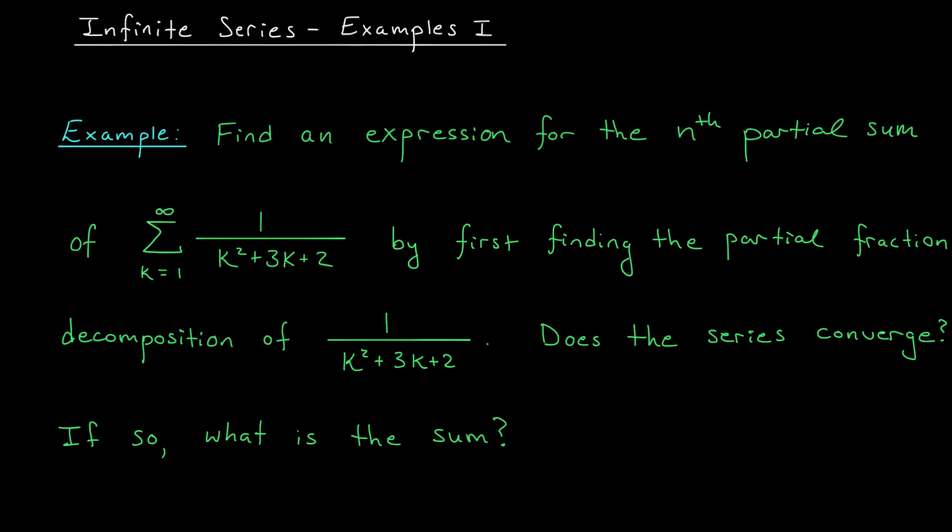These are the numbers that you get by adding up just the first few terms from your series. So Sn would be what you get by adding up the terms A0, A1, all the way up to An.